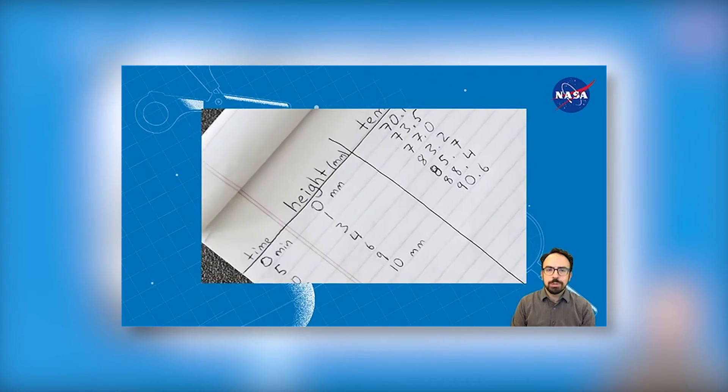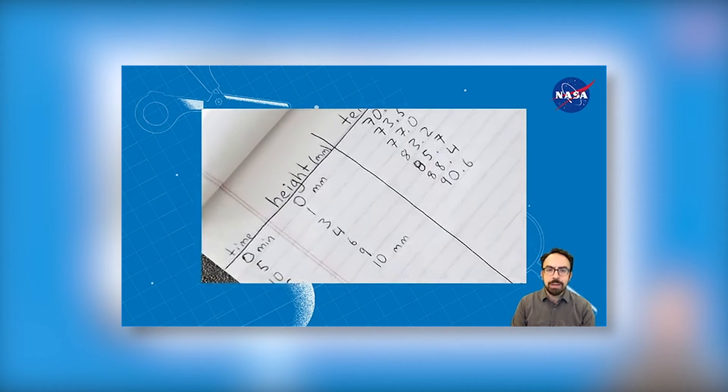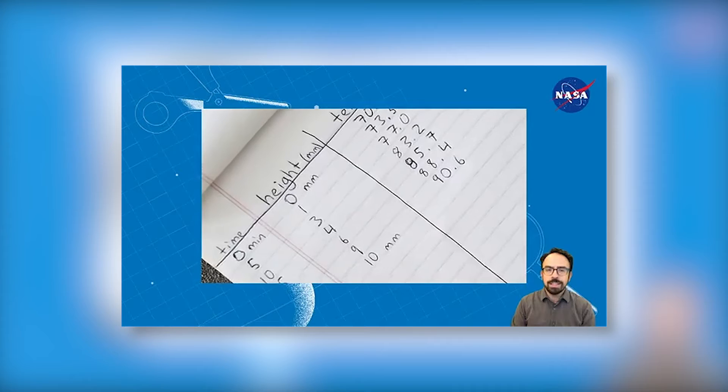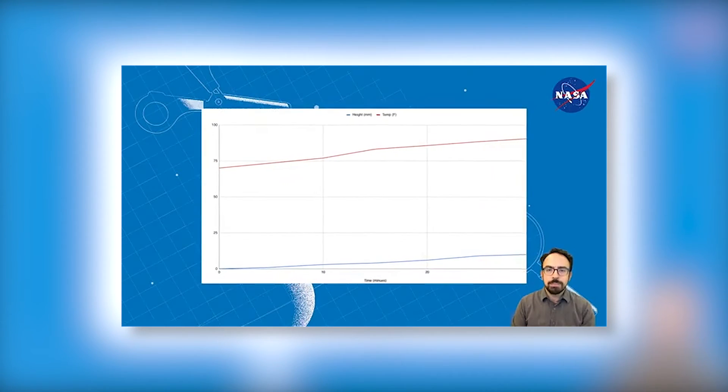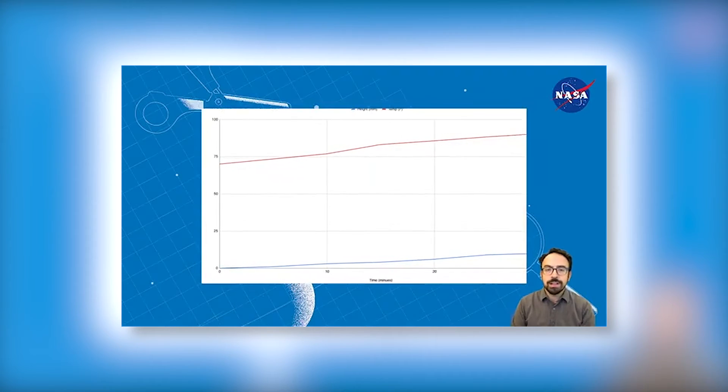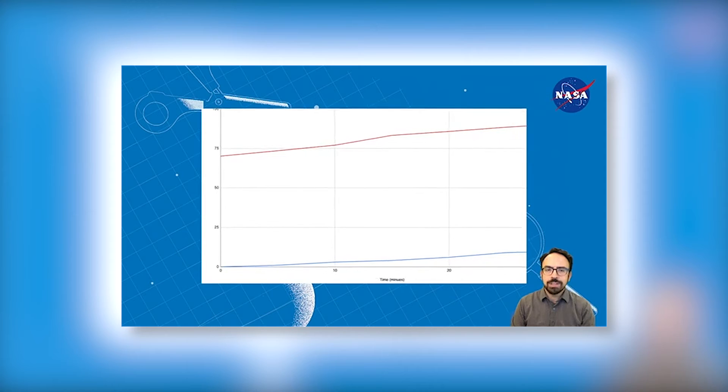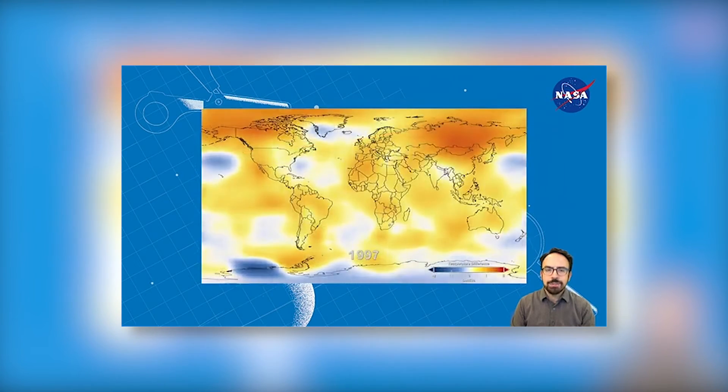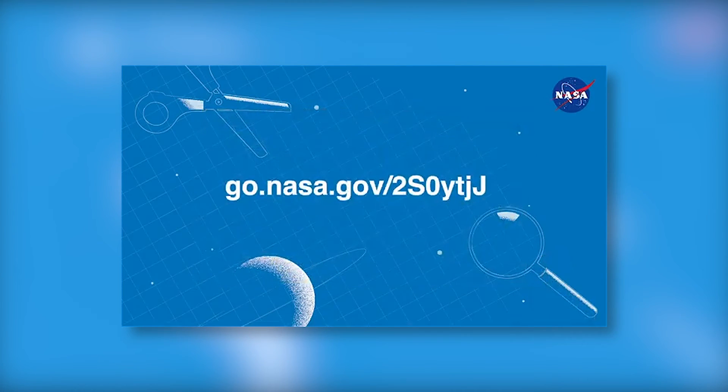There's no specific amount of time to observe and record, but after you've collected enough data to notice a pattern or trend in the water level and temperature, write a description of what you observe in the straw. Graph your measurements on paper or using spreadsheet software if you have any. Think about what happened to the water level as heat energy was added and think about how this relates to increasing global temperatures and sea level rise. For more details on this activity and ideas for more projects you can do at home, visit the URL on the screen or click the link in the video description.